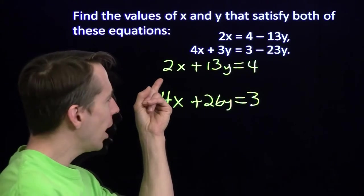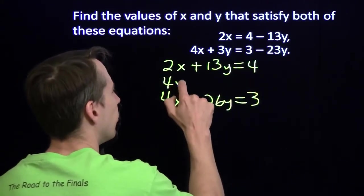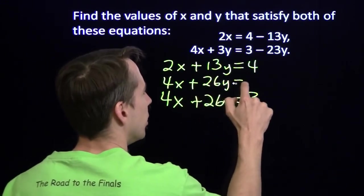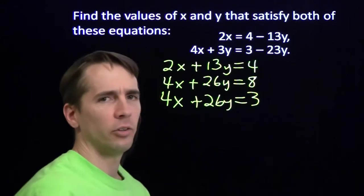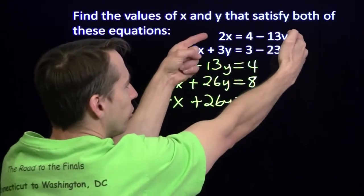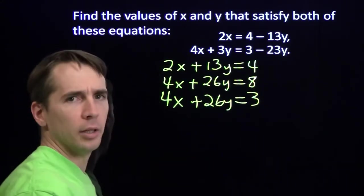So look at what happens when I multiply both sides of this equation by 2. 4x plus 26y equals 8. Let's multiply both sides of this equation by 2. So this equation I can rewrite like this. This equation I can rewrite like this.